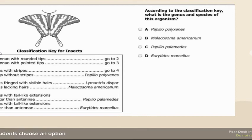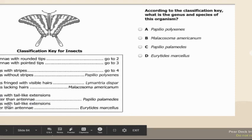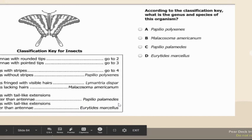For the dichotomous key — we're looking for the genus and species of this organism. Antennae with rounded tips, not pointed, so go to two. Wings have stripes, so go to four. Wings with tail-like extensions longer than antenna — that matches. The correct answer is Eurytides marcellus. We worked through each description to match the picture.